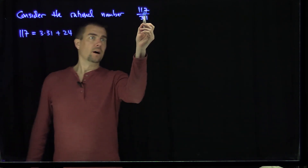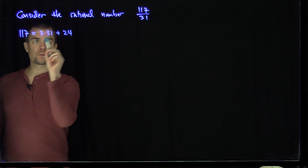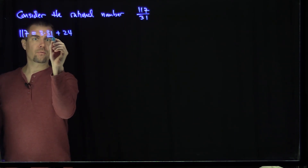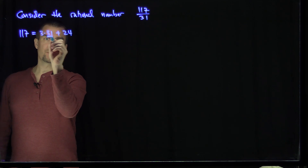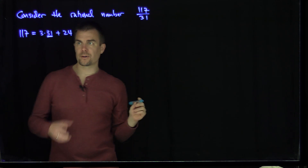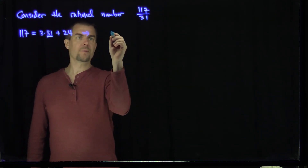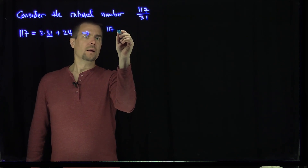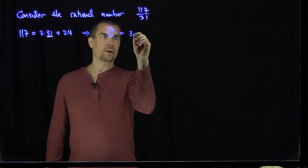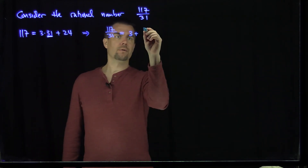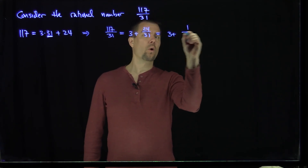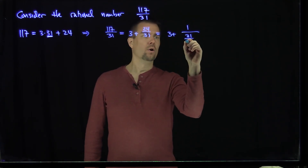So in other words, we have the dividend, the divisor of 31, the quotient of 3, and the remainder. What this tells us is I can write 117 over 31 as 3, and then I have 24 over 31 left over. With continued fractions, I can write this as 3 plus 1 over 31 over 24.